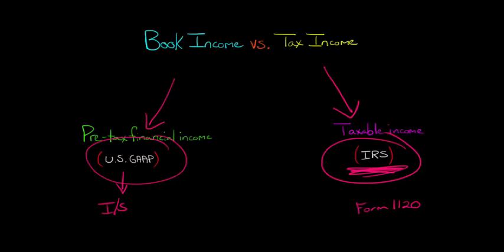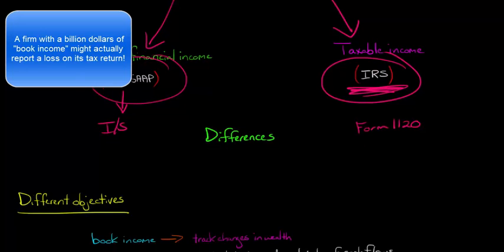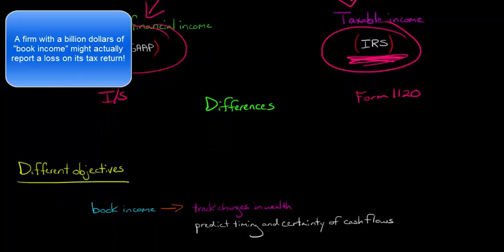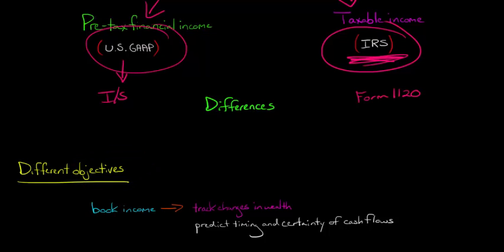So there are going to be large differences in some cases. There are going to be differences between book and tax income. And the reason is that these different types of income are computed for different purposes. They have different objectives.